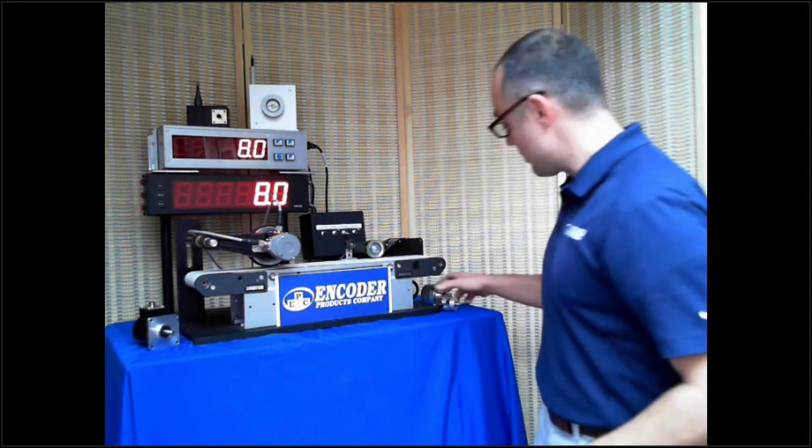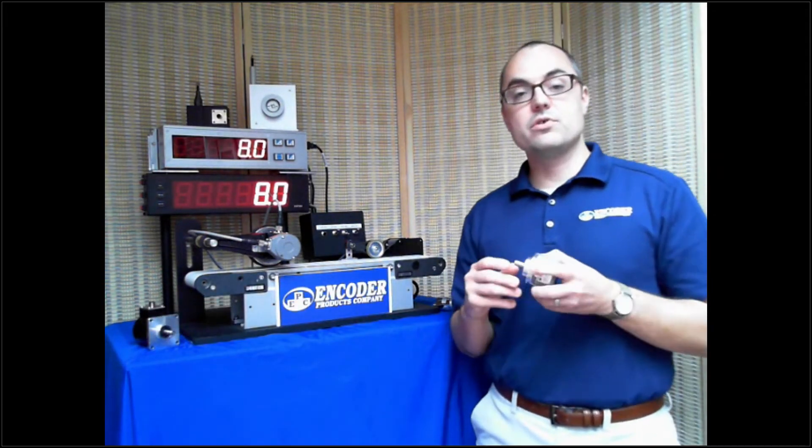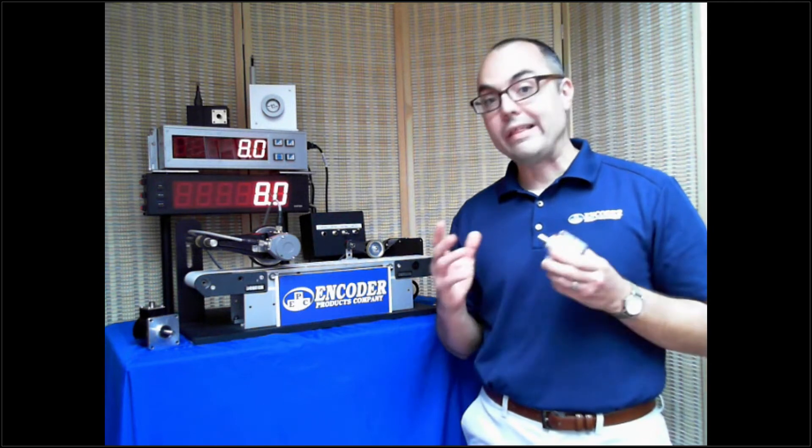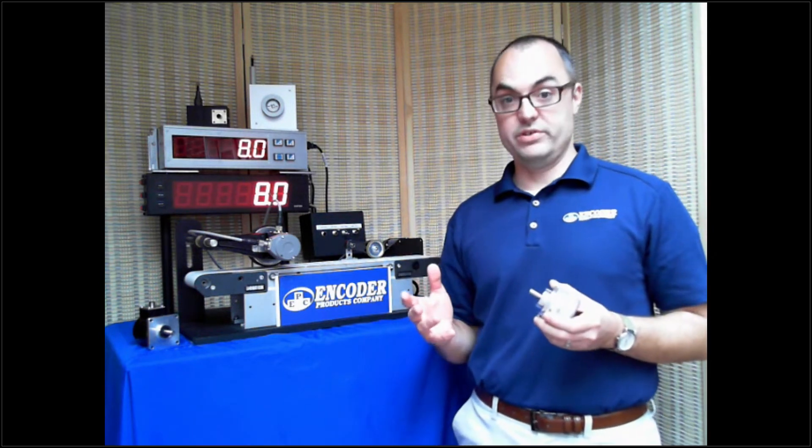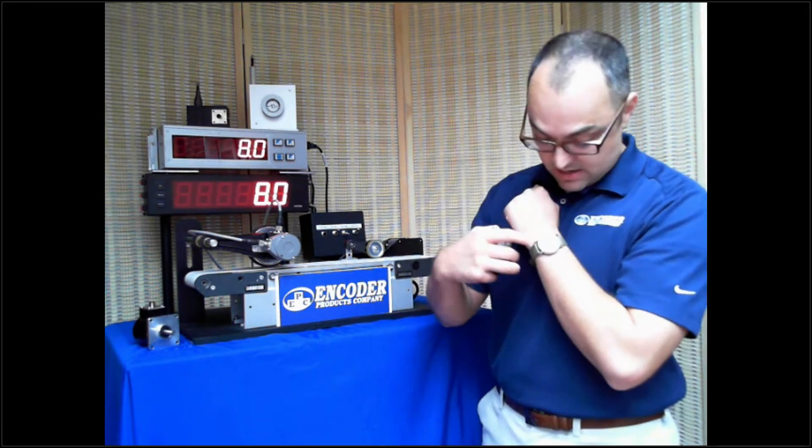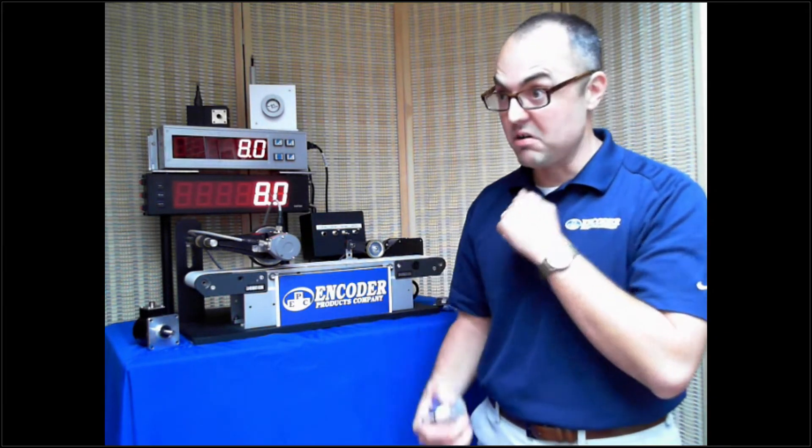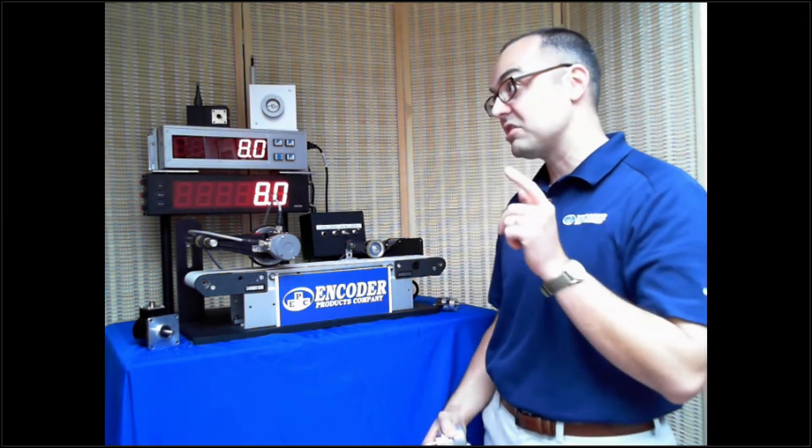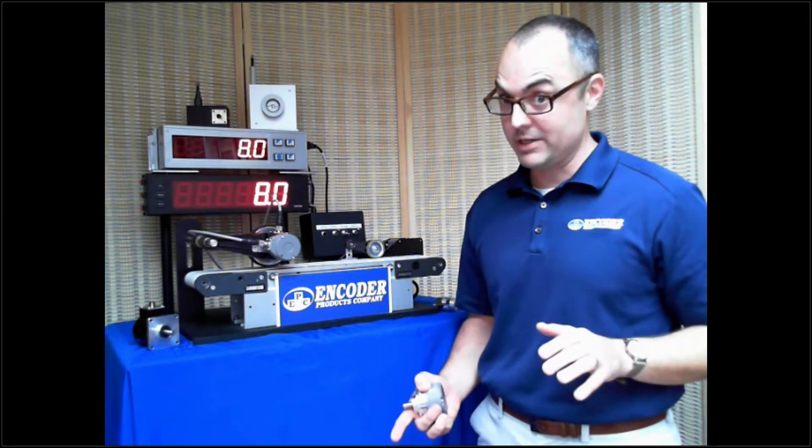An absolute encoder is different. Absolute encoders actually tell you where they are. They give you a discrete position. So for example, I have a watch here and if I removed all the numbers, it'd be an incremental encoder. If I just listened to the ticking, and counted those ticks, I could tell you how many seconds run by. Better not miss one.